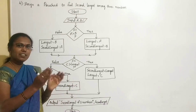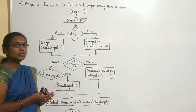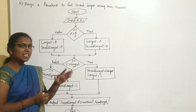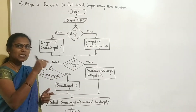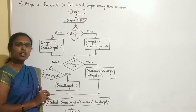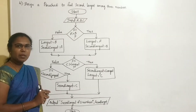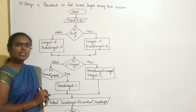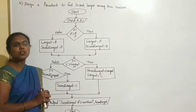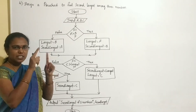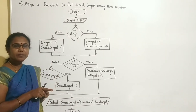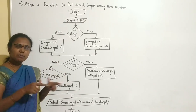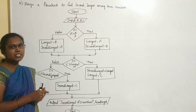In a flowchart, certain well-defined symbols are used to design it. The oval symbol is used to represent start and stop, or terminals. The parallelogram symbol is used to write input and output statements. The rectangle symbol is used to write processing statements. The diamond is the decision-making symbol used to write conditions. The loop symbol is used to write looping statements.